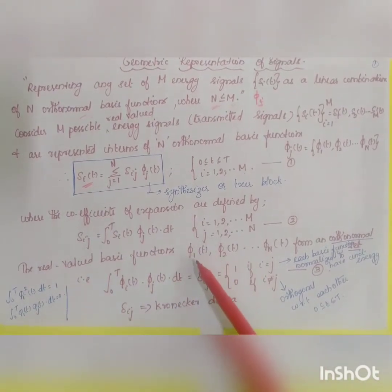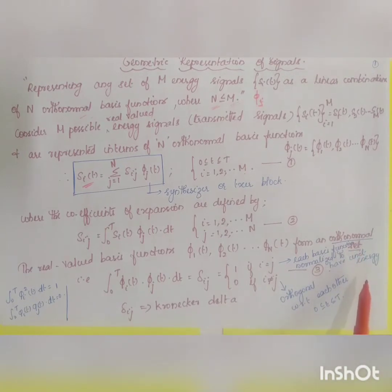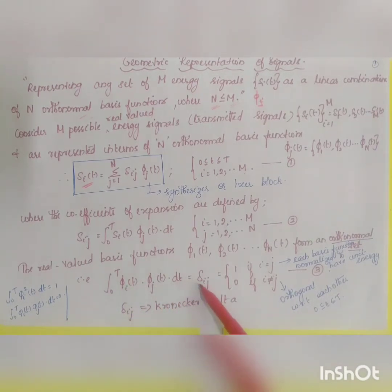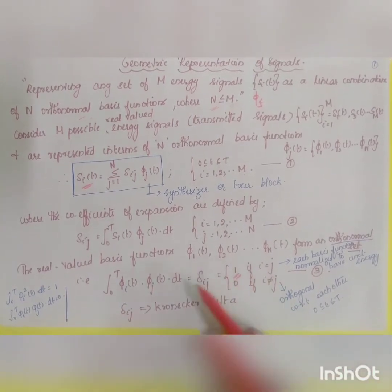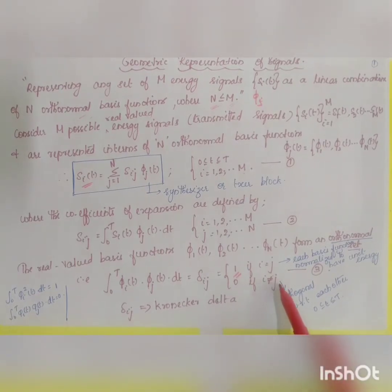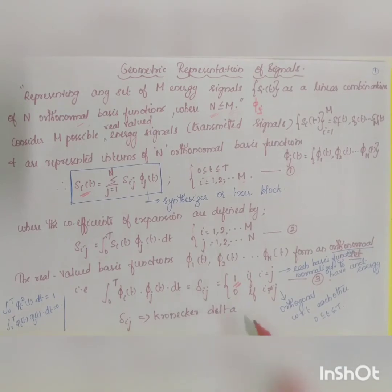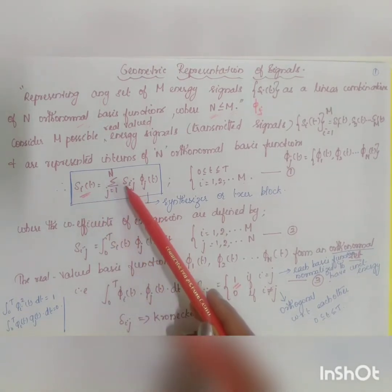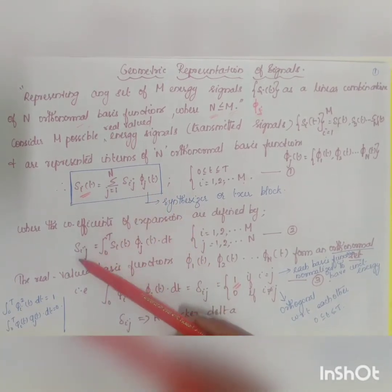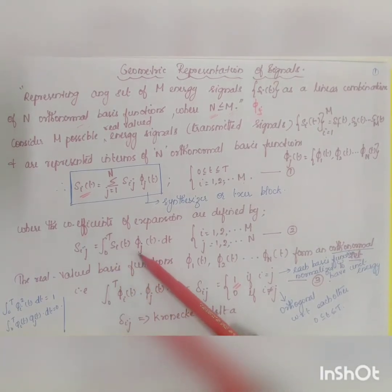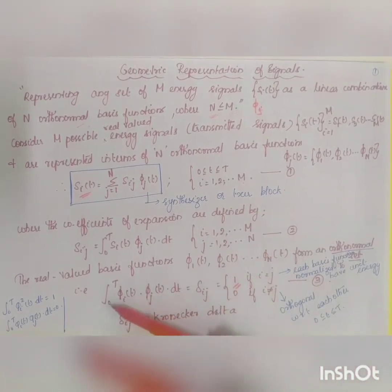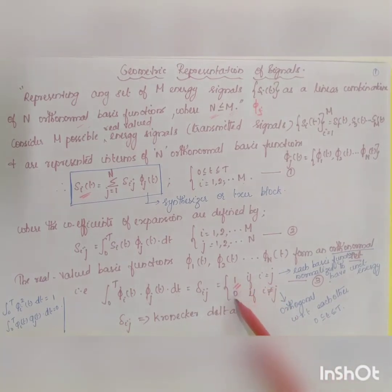The real-valued basis functions phi_1(t), phi_2(t), ..., phi_n(t) form an orthonormal set. An orthonormal set means that the integral from 0 to T of phi_i(t) × phi_j(t) dt equals delta_ij, which equals 1 if i = j and 0 if i ≠ j. Delta_ij is called the Kronecker delta.